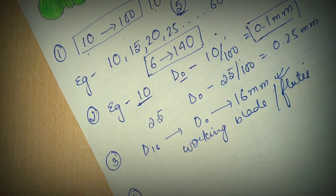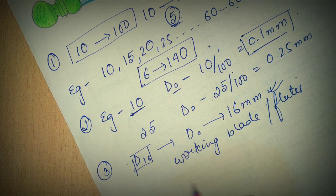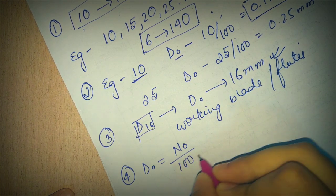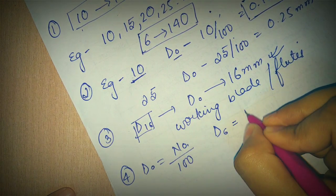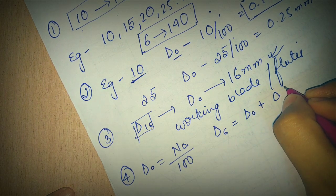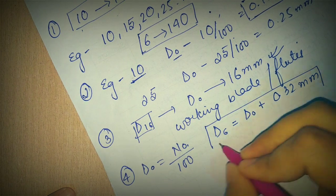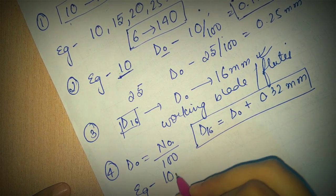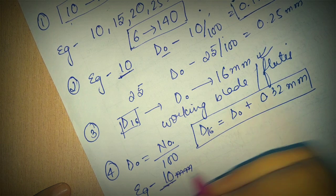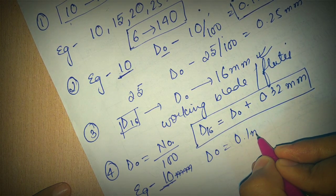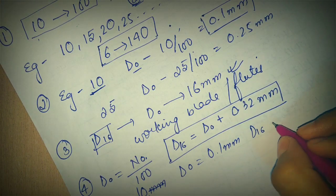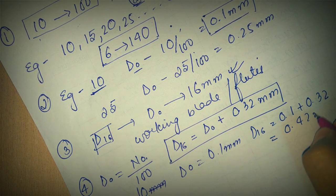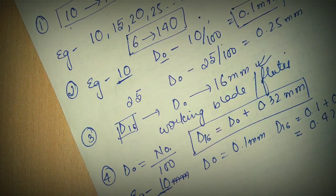Now coming to the fourth point. The fourth point is how do we calculate D16? D0 is the number of the instrument, the numbering of the instrument upon 100. Now D16 is D0 plus 0.32 mm. This is the formula to calculate D16. For example, let's take an example. I am going for 10 number instrument. So for 10 number instrument, D0 will be 0.1 mm and D16 will be 0.1 plus 0.32, so that is 0.42 mm.